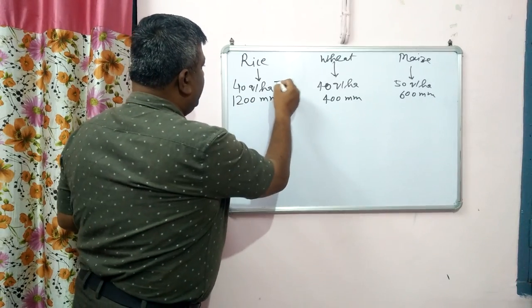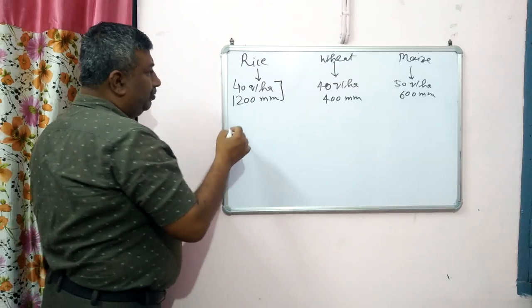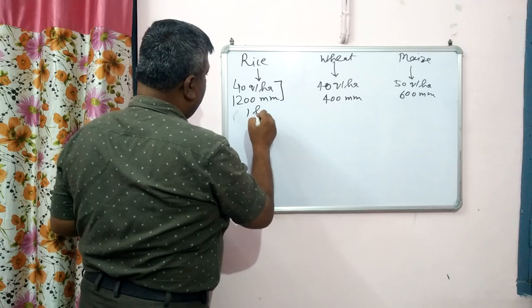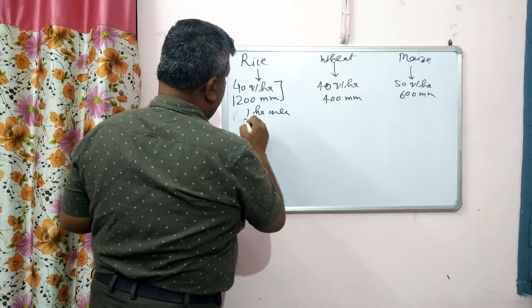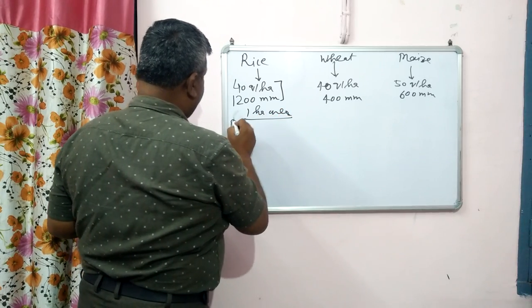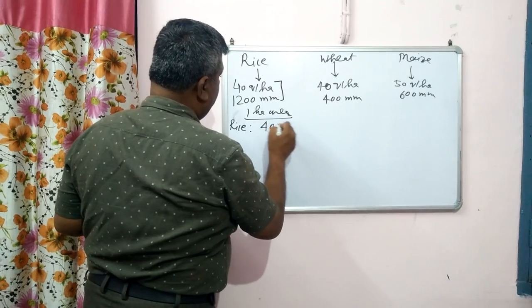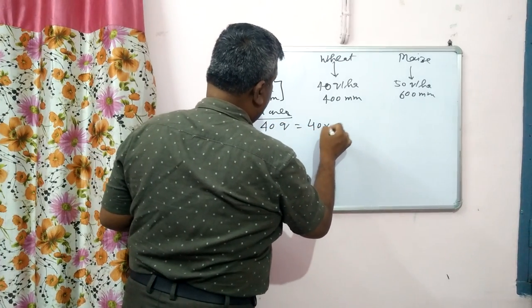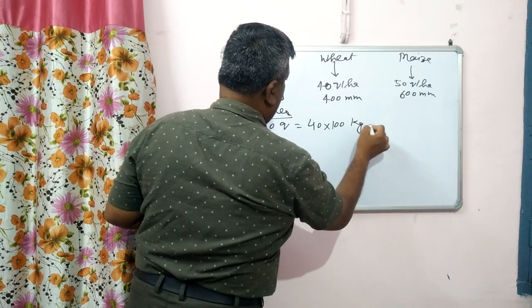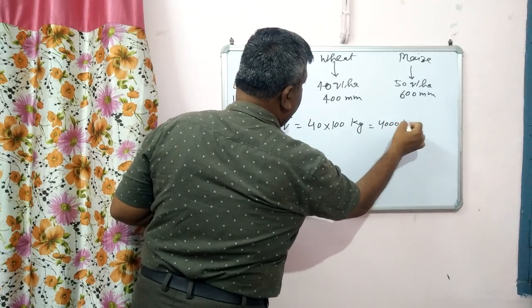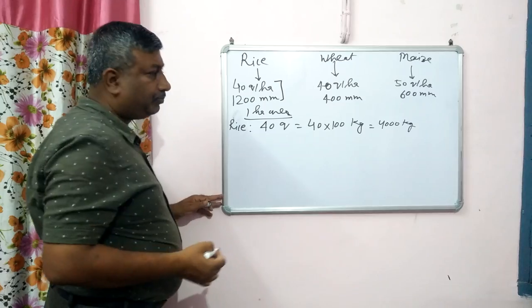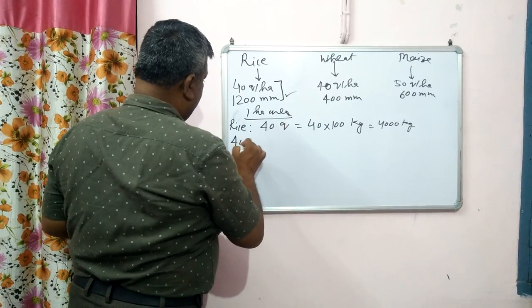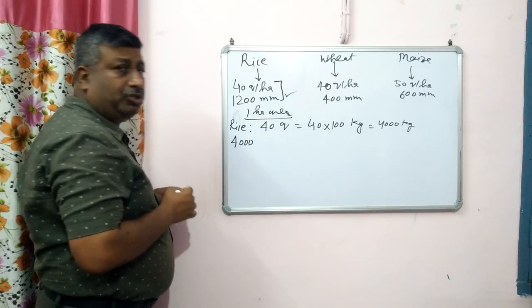Now with these two data points, we can calculate how. In one hectare area, taking the example of rice — how much grain is produced? 40 quintal. Convert 40 quintal into kilograms: 40 × 100 = 4,000 kg of grain is produced per hectare. And the water requirement is 1,200 mm — so 1,200 mm of water is used.